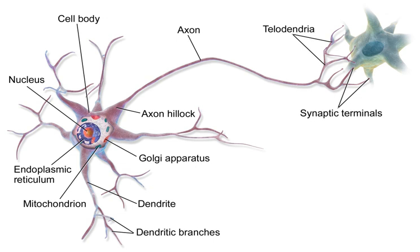An example of a neural circuit is the trisynaptic circuit in the hippocampus. Another is the Papez circuit linking the hypothalamus to the limbic lobe. There are several neural circuits in the corticobasal ganglia thalamocortical loop, which carry information between the cortex, basal ganglia, thalamus, and back to the cortex. The largest structure within the basal ganglia, the striatum, is seen as having its own internal microcircuitry. Neural circuits in the spinal cord called central pattern generators are responsible for controlling motor instructions involved in rhythmic behaviors such as walking, urination, and ejaculation. The central pattern generators are made up of different groups of spinal interneurons.